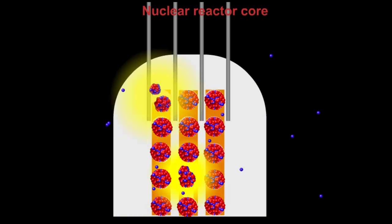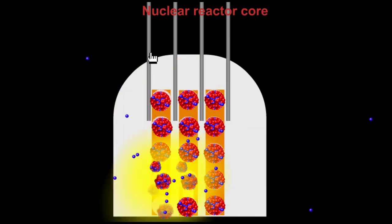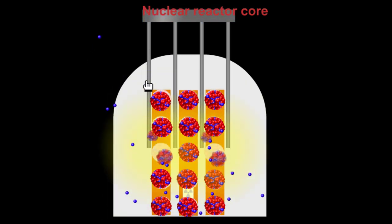If we lower them all the way down, then we can shut down the reactor and the fission reactions stop.